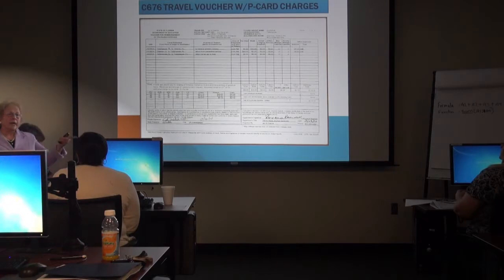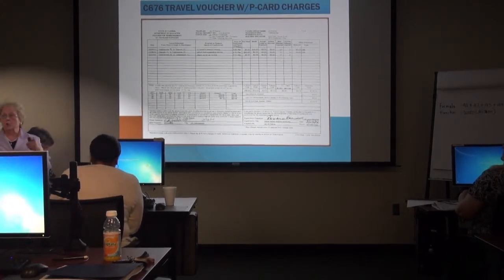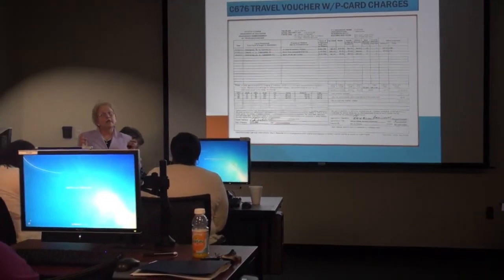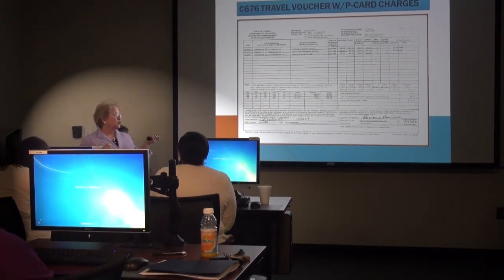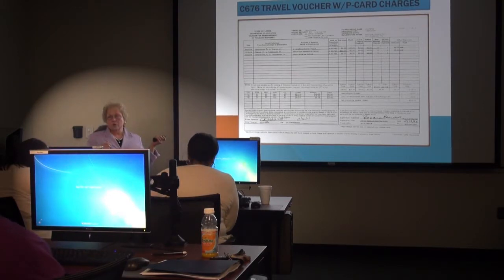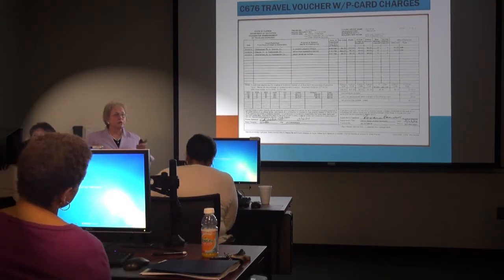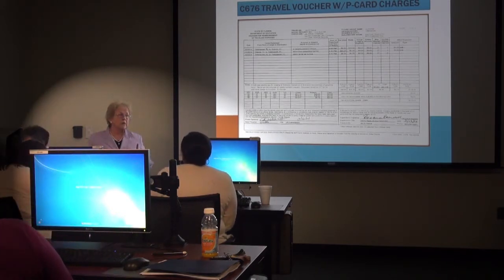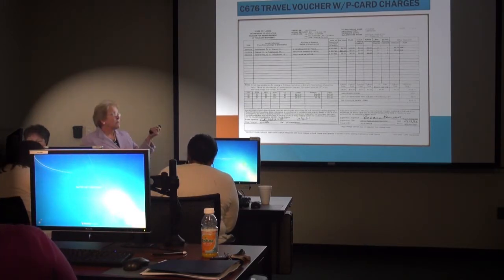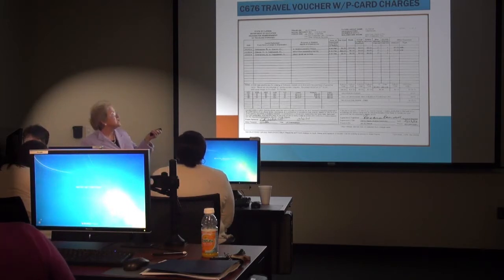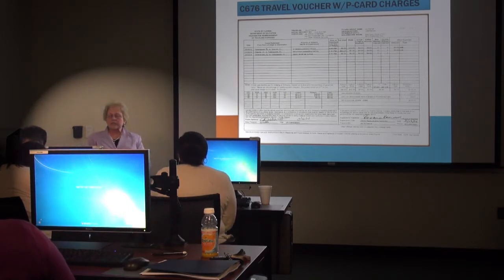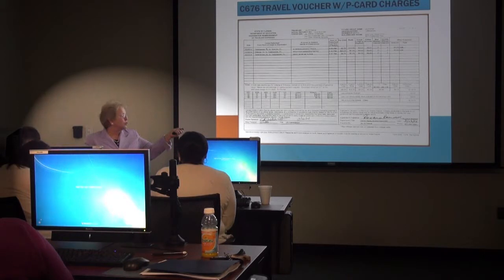How do we ensure that they actually stayed with a friend? We can't ensure that. The traveler will state in the notes that they stayed at a private residence and are therefore requesting only straight per diem. The burden of proof and truth is on them. We hope that people understand we are not the last people who see travel vouchers — we're only part of the beginning of that trip through the system.